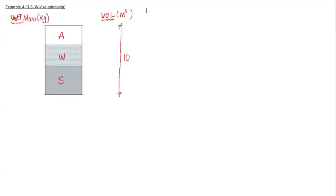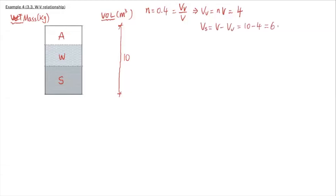The first given is porosity, n = 0.4. The definition of porosity is the volume of voids over total volume. Total volume is 10, so volume of voids is n times V, which equals 4 cubic meters. Therefore the volume of solids is 6 cubic meters. The total volume of voids — that is, volume of air plus volume of water — is 4.